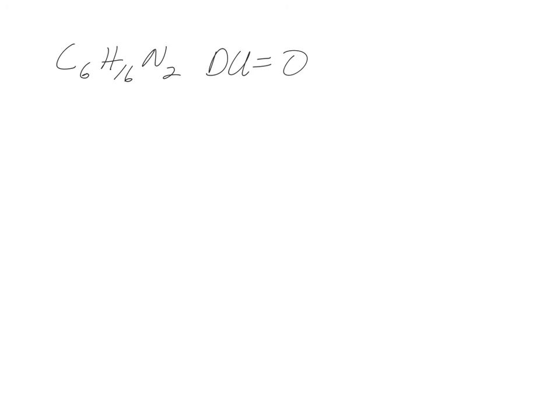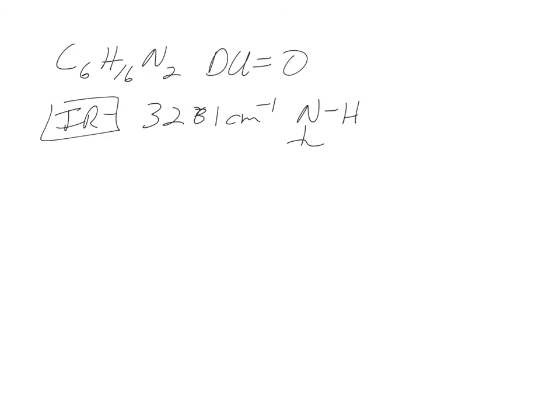Another problem: C6H16N2. Degrees of unsaturation is zero, so no pi bonds and no rings. The IR tells us one thing — a stretch at 3281. Can't be OH (no oxygen in formula), can't be terminal alkyne SP C-H (no degrees of unsaturation). It has to be N-H. Remember, nitrogen has three bonds, so there are two sides open on that nitrogen piece.